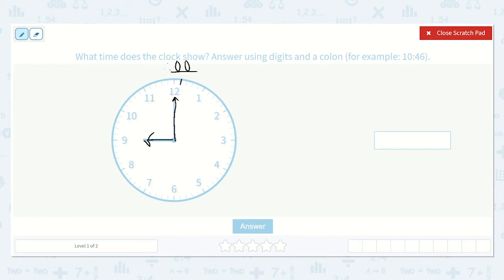We see we write the hour first. What hour is it pointing to? Yes, nine. And it is nine o'clock, because the minute hand is pointing directly at the 12, which tells us zero minutes have passed.